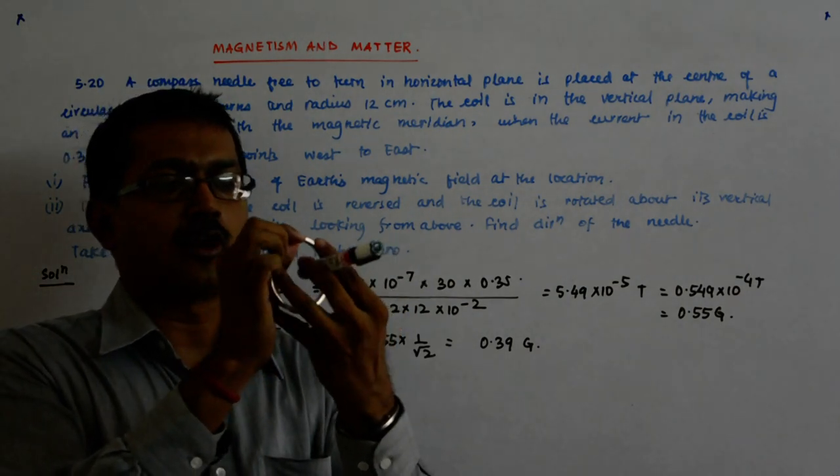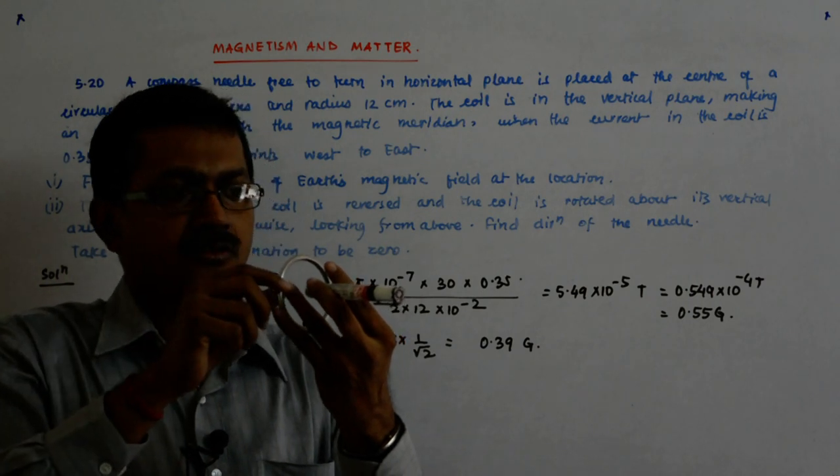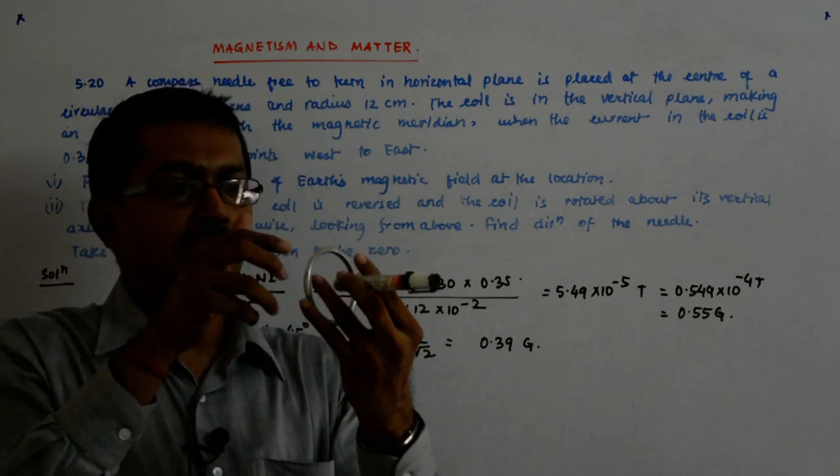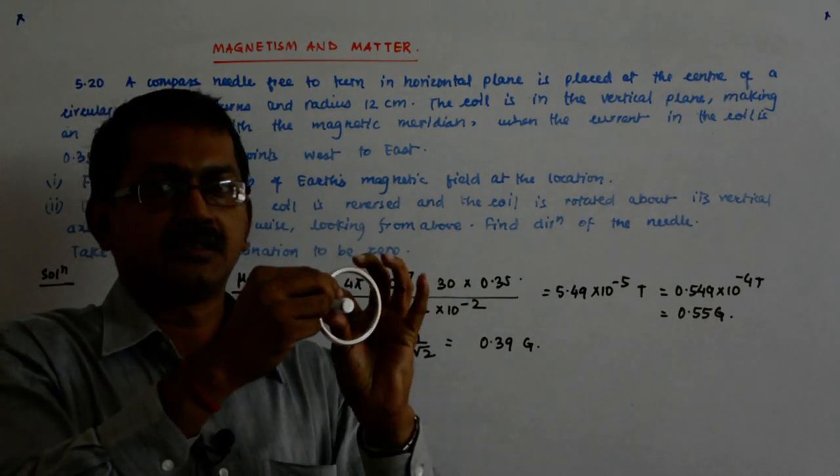Earlier it was clockwise seeing from my direction and anti-clockwise from yours. So the direction of the field was as shown. Now the moment you flip it, immediately it becomes like that. Then what do they say?